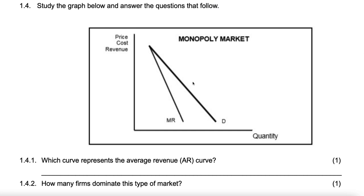The next thing we see is this is the demand curve. We know that the demand curve is equal to the average revenue curve, even though it's not stated. So look out for a question on that. This is marginal revenue — we see that it lies below the demand curve. Under Perfect competition, you saw that they are equal. The question is: why are they equal under Perfect, and how come under Imperfect they are not equal?